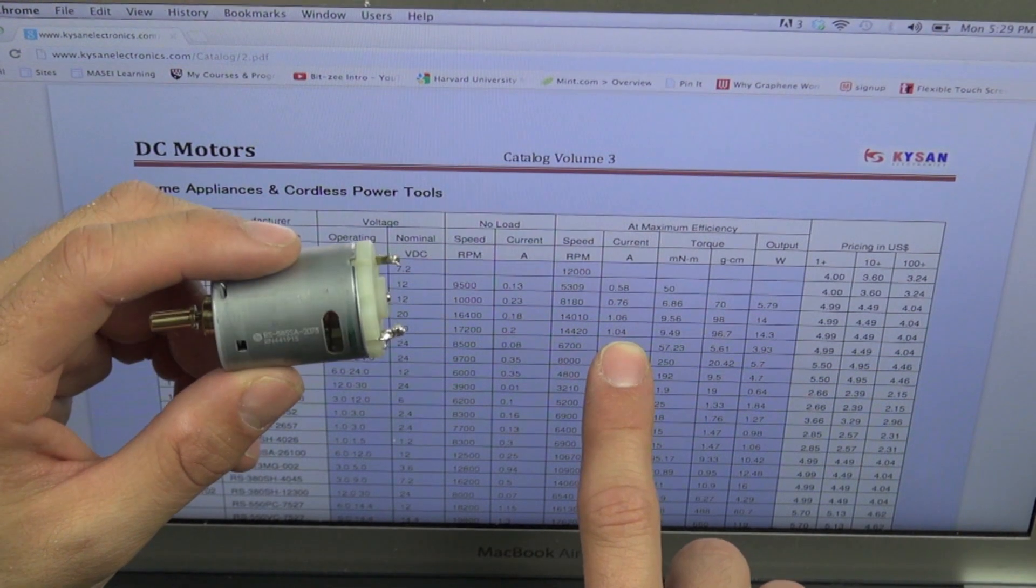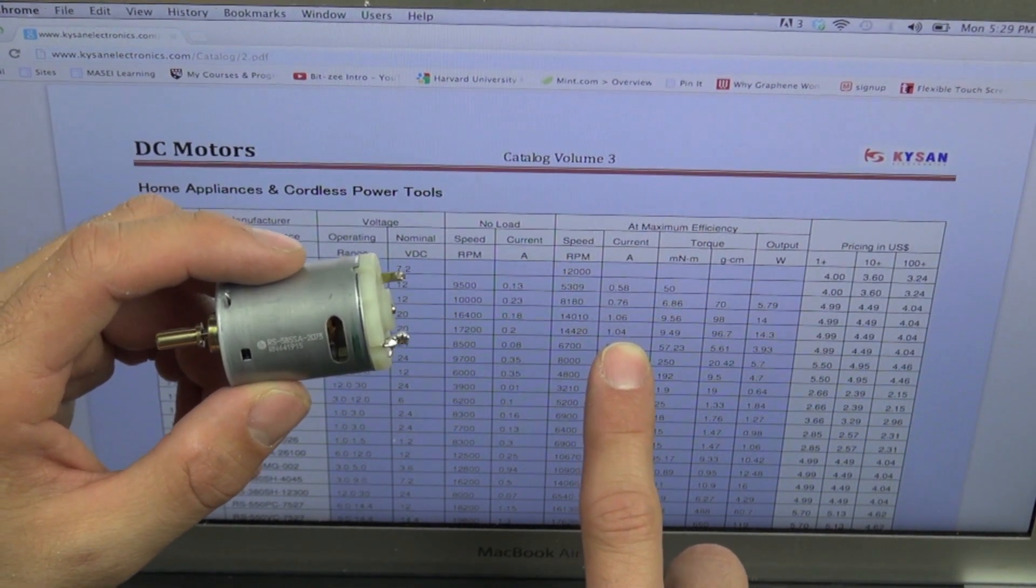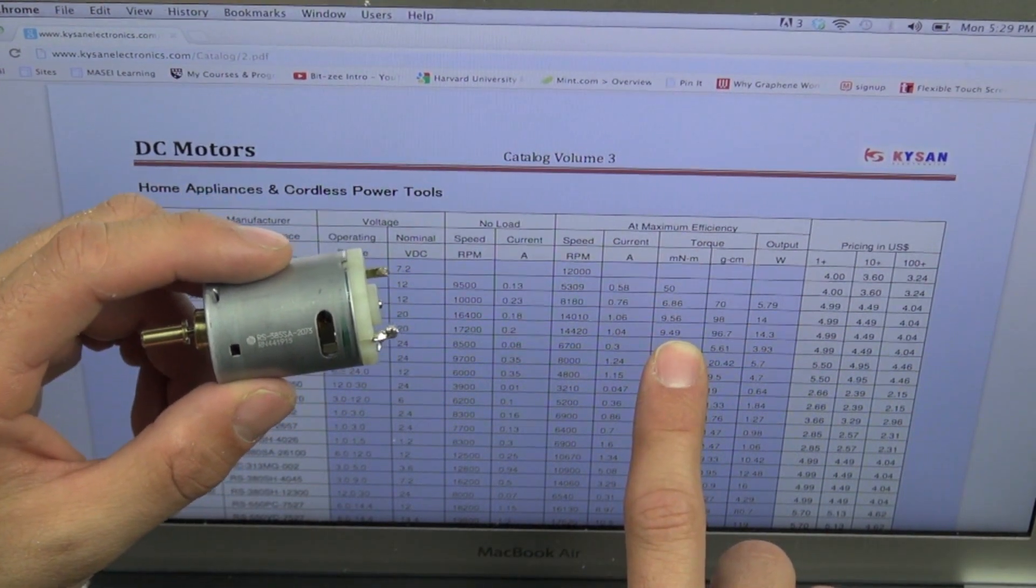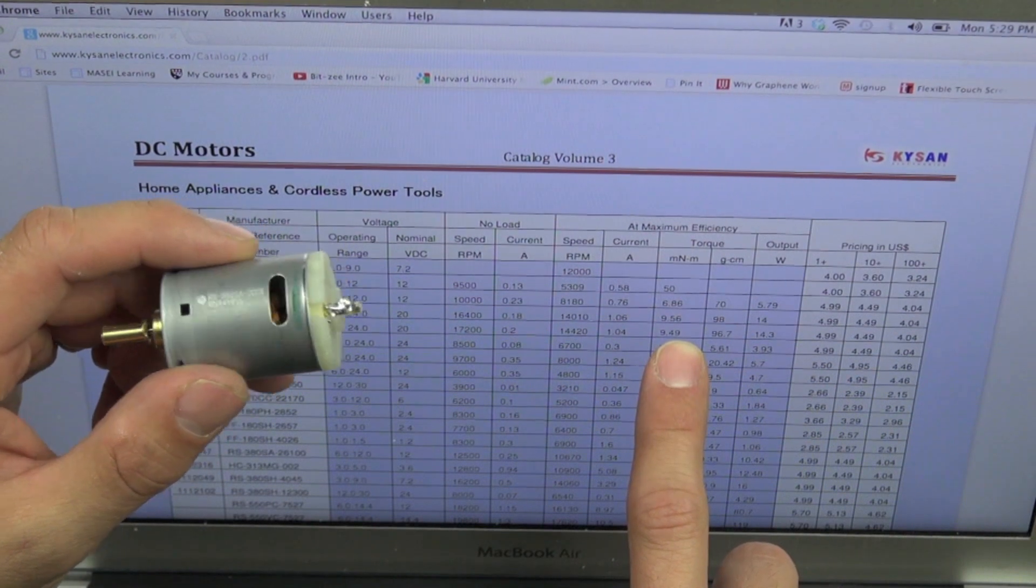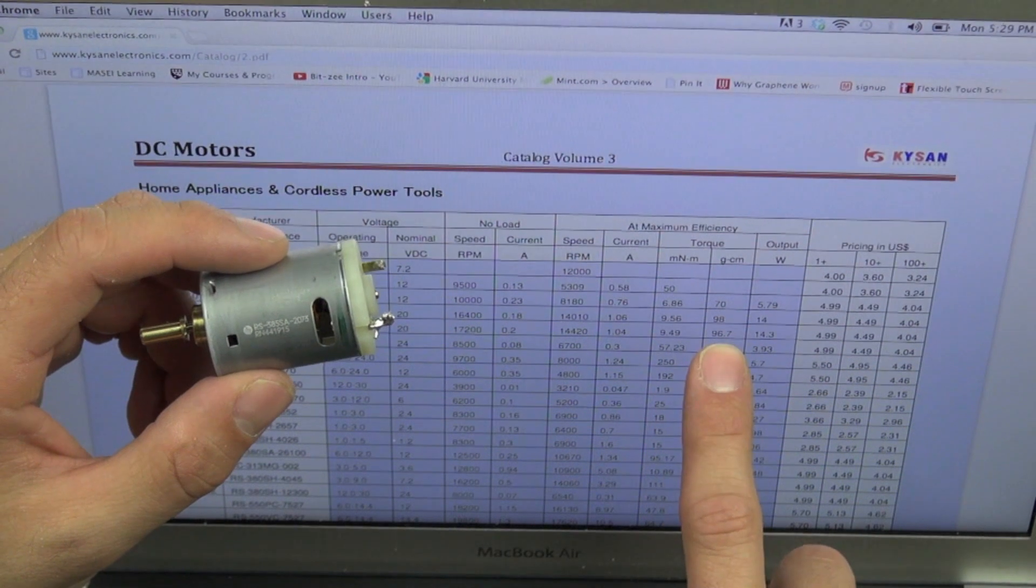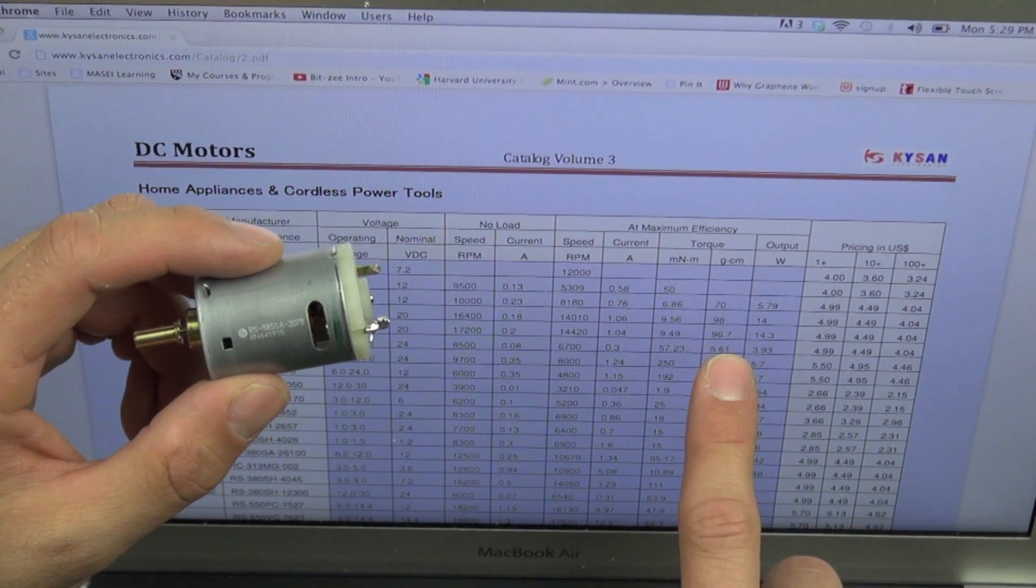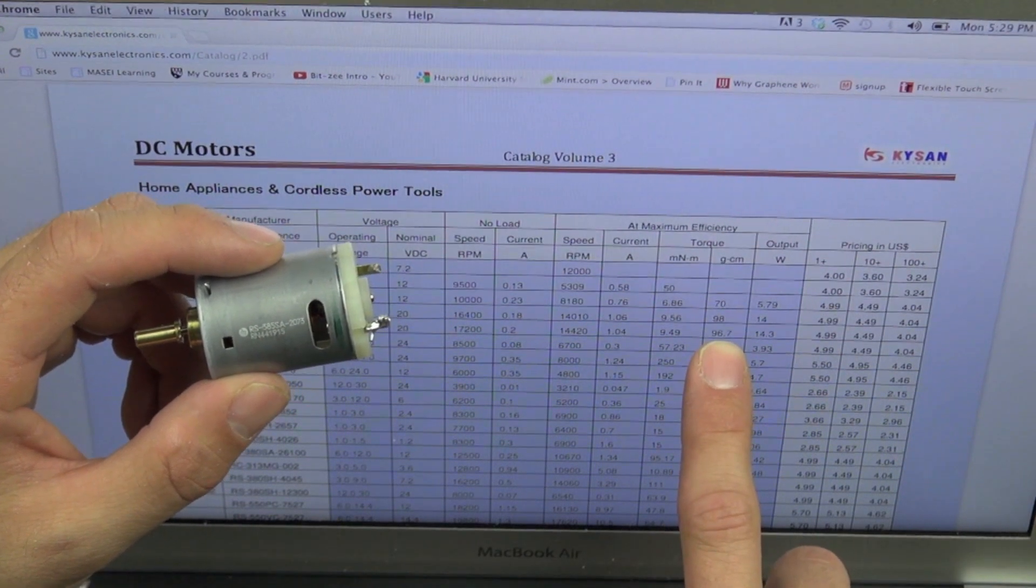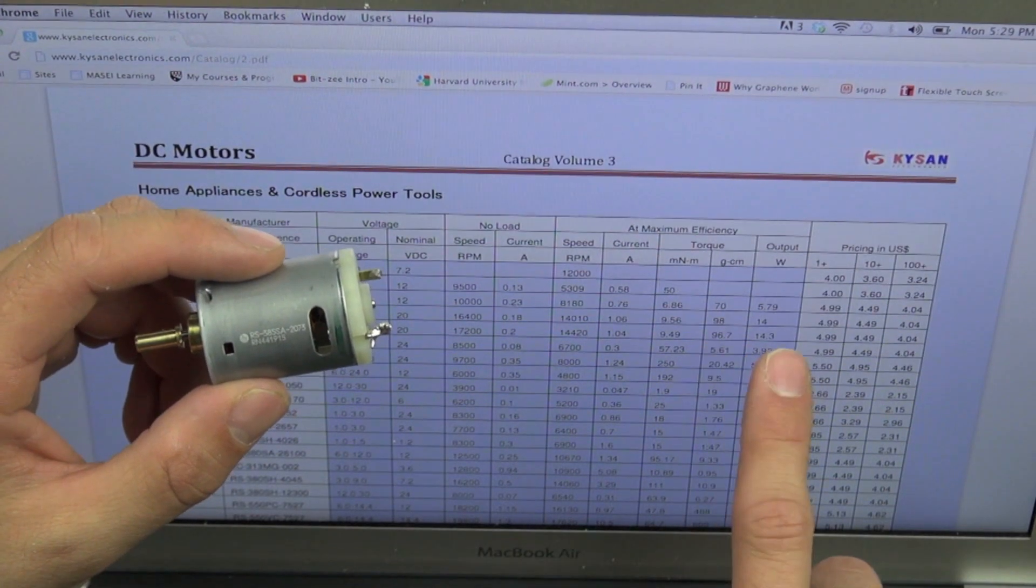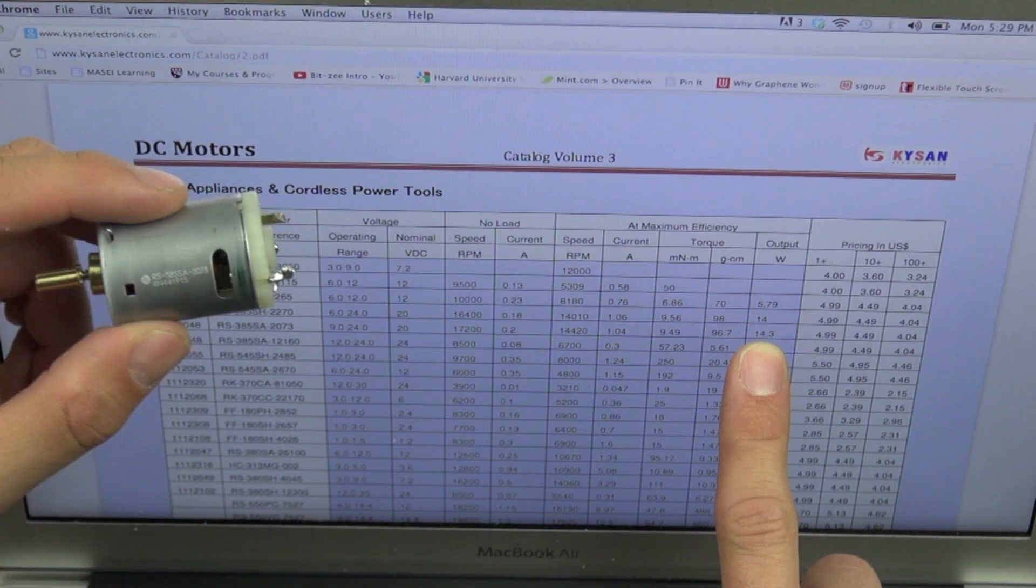And you can see how much torque it has here. The amount of torque is 9.49 and that looks like newton millimeters. As far as torque you can see another specification here, that's 96.7 gram centimeters, and output is 14.3 watts.